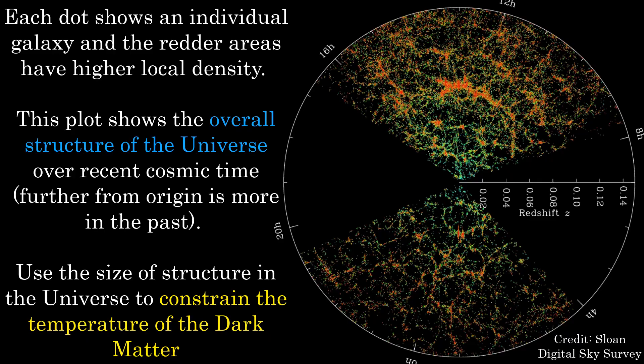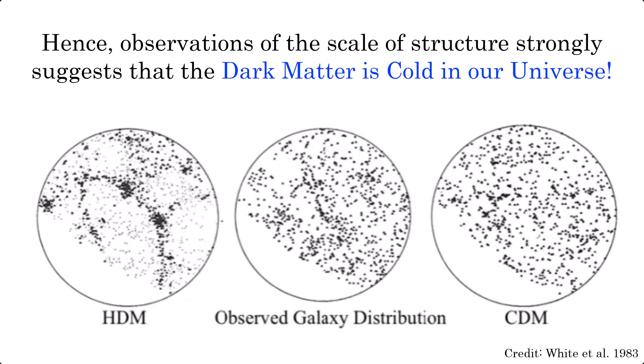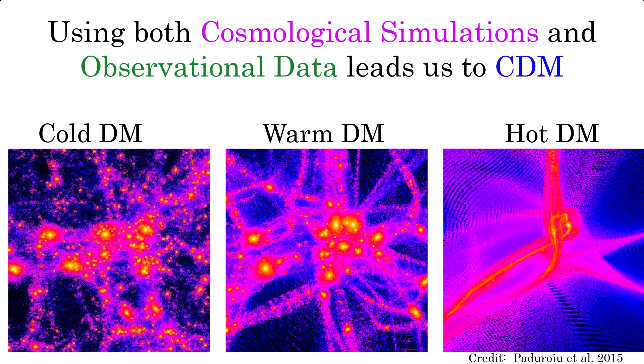This can then be compared to the theory regarding how structures should look at present in universes with different dark matter temperatures. This is shown here, and what you can see is that the theoretical cold dark matter simulation images matches the observed structure distribution much better than the hot dark matter, meaning that the dark matter in our universe must be cold, and not affected much at all by free streaming.